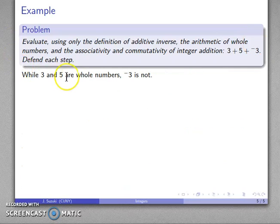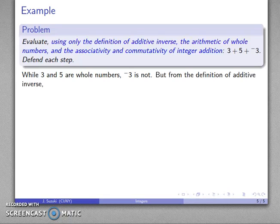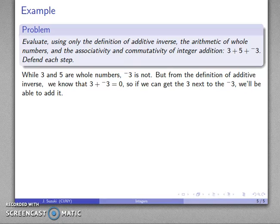First of all, 3 and 5 are whole numbers because we can have three things, we can have five things. Additive inverse of 3 is not. We cannot have additive inverse of three things.